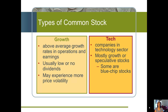Another type of stock is a tech stock. The NASDAQ usually houses most of the tech stocks. These are often growth stocks as well, and sometimes they're speculative stocks because of so much volatility. Some of them could even be blue chip stocks, like IBM, for example.